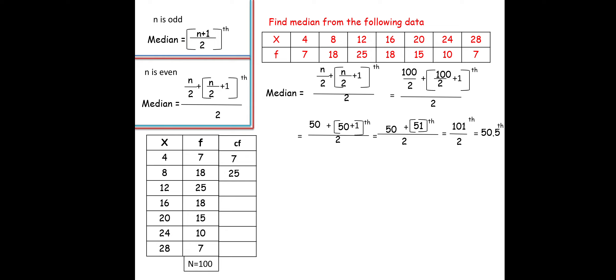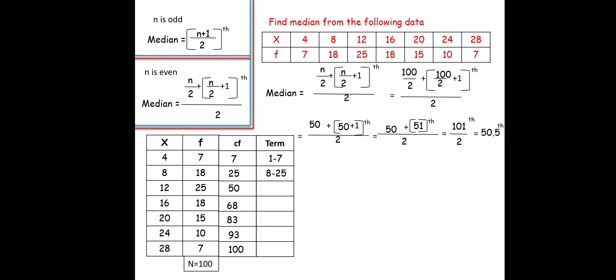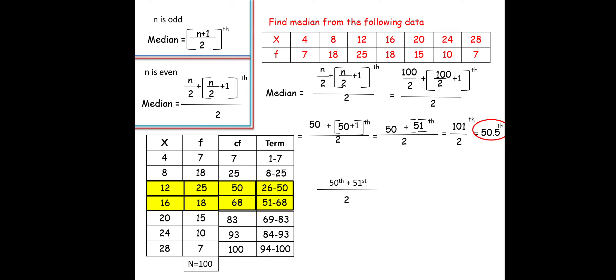Cumulative frequencies: 7, 7+18=25, 25+25=50, 50+18=68, 68+15=83, 83+10=93, 93+7=100. Now, where does the 50.5th value fall? We add a terms column: 1–7, 8–25, 26–50, 51–68, 69–83, 84–93, 94–100. The 50.5th value falls in both the 26–50 and 51–68 ranges — i.e., at the 50th and 51st positions.